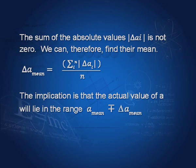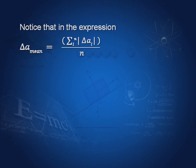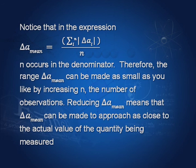Notice that in the denominator of ΔA_mean there is n, the number of observations. This plays a very important role. Since n occurs in the denominator, the range ΔA_mean can be made as small as you like by increasing the number of observations, reducing ΔA_mean and allowing A_mean to approach as close as desired to the actual value of the quantity being measured.